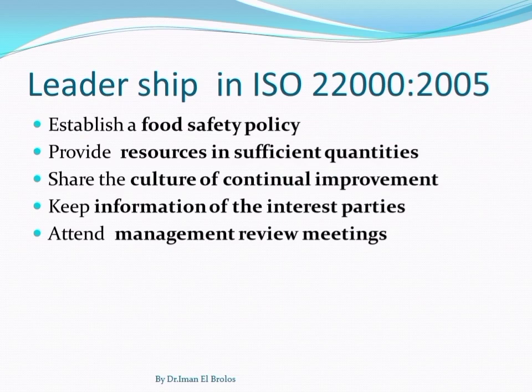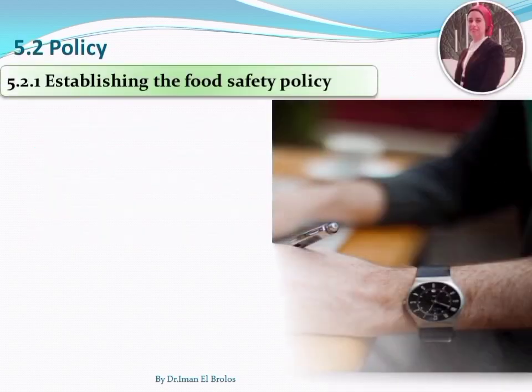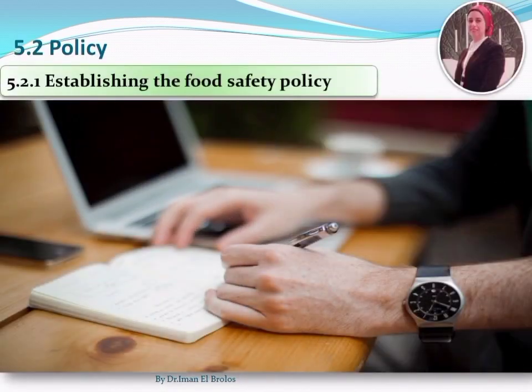Additionally, in the new version, the top management shall also make sure of fulfilling the integration between the food safety goals and the organization's strategic plans, and ensure the integration of all food safety management system requirements into organization business processes. The second section is 5.2 Policy.